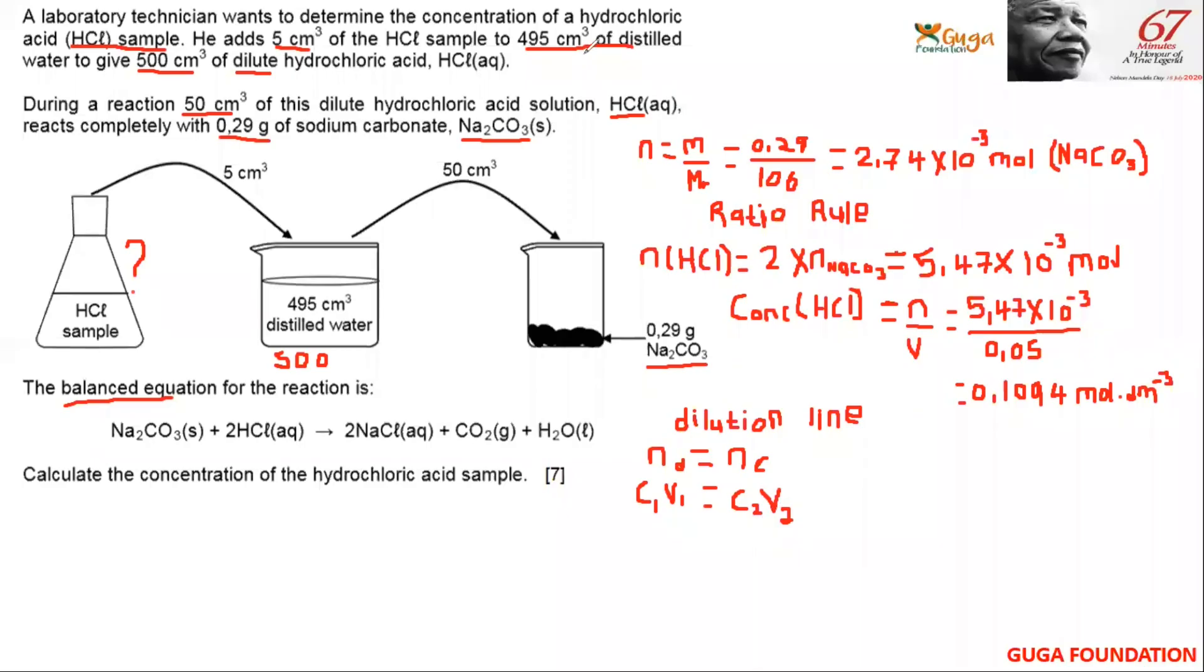Now we know that n equals CV, so it will be C₁V₁ equals C₂V₂. This one is for the dilution and the other for the concentrated. So C₁ is 0.1094 multiplied by 500, the total of the distilled water, equals C₂ multiplied by the volume transferred from the original sample, which is 5. Here we can just put them without converting because V₁ and V₂ will cancel out.